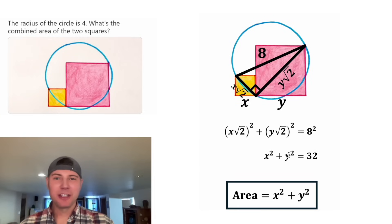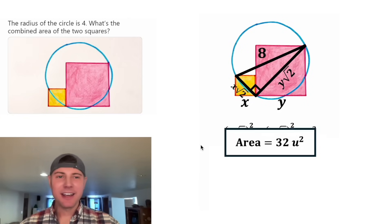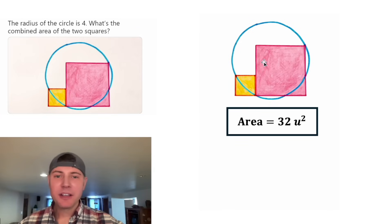And now we know x squared plus y squared is equal to 32. And that was the area of our two squares. So in the place of this, let's plug in 32. Let's give it a label of units squared. And that is the answer to our question. If the radius of our circle is four units, then the sum of the two squares inside of it like this would be 32 units squared.